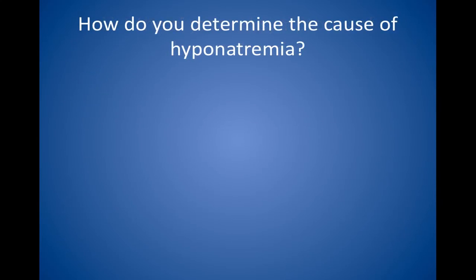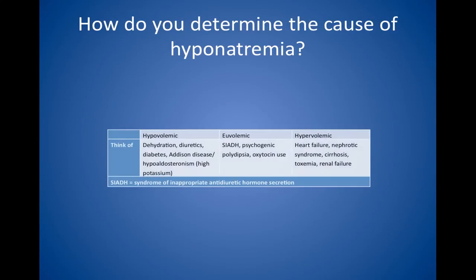How do you determine the cause of hyponatremia? The first step is to look at the volume status. If the patient is hypovolemic, think of dehydration, diuretics, diabetes, Addison disease, or hypoaldosteronism — in which case you'll see a high potassium. If the patient is euvolemic, think of SIADH, psychogenic polydipsia, or oxytocin use.